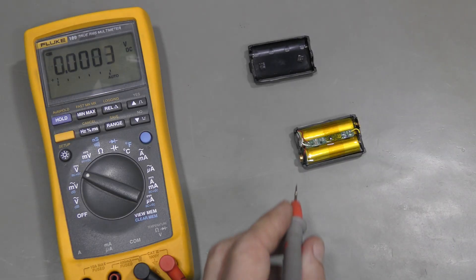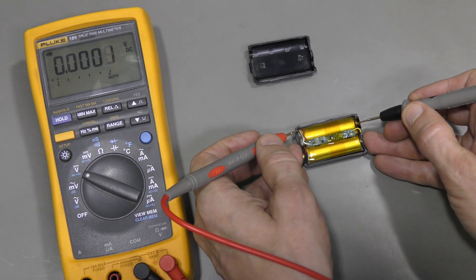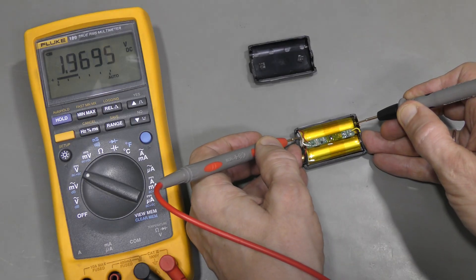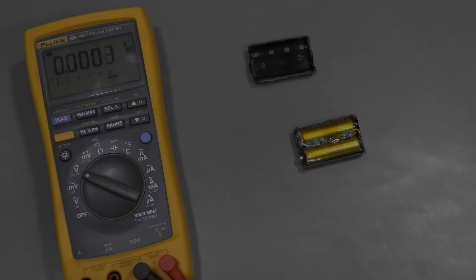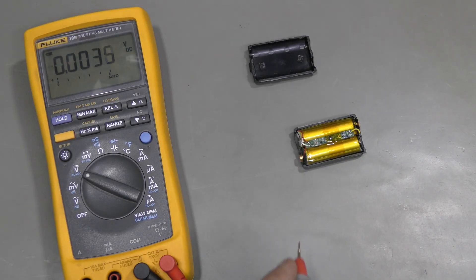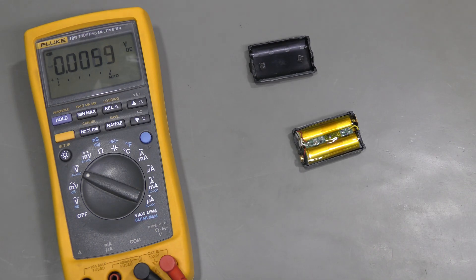Now let's measure the cells directly bypassing the BMS. About 2V. This is not too bad. My guess is that the battery was fully discharged to begin with. And then kept like that for a very long time. All batteries have some self-discharge. Lithium ion batteries don't lose the charge very quickly. Perhaps just a few percent a month.